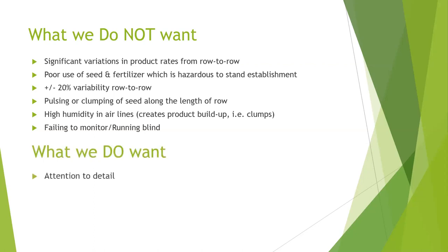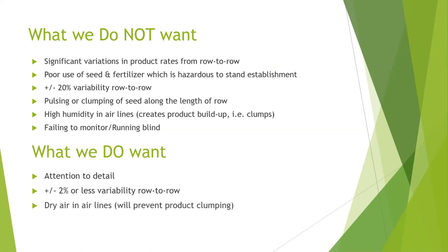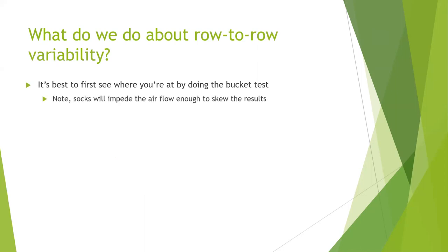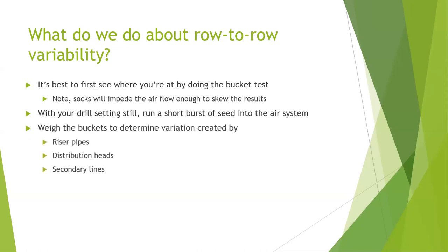What we do want is paying attention to detail — achieving plus or minus 2% or less variability from row to row, keeping dry air in the lines, and planting with peace of mind. If you want to do it right, first see where you're at by doing the bucket test. The correct way to measure this is with buckets or pans under each opener to collect product for weighing. Don't use socks or cloth bags as these will impede airflow enough to skew the results. Simply do short bursts of seed or fertilizer into the airstream with the drill sitting still, and weigh the product in the buckets carefully to find variation created by the riser pipe, manifold, and secondary lines.